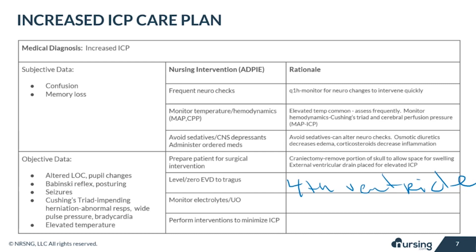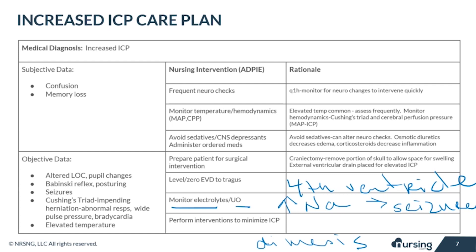Because of medications given to manage increased ICP like mannitol, it is important to monitor electrolytes and urine output. Mannitol and hypertonic saline can increase sodium levels, causing fluctuations that could lead to seizures. Urine output should be monitored to verify diuresis. Maintain the head of bed between 30 and 45 degrees — below 30 and above 45 can both increase ICP. Decrease stimuli, as agitation and stress can increase ICP, and avoid Valsalva maneuvers because coughing and bearing down can also increase ICP.